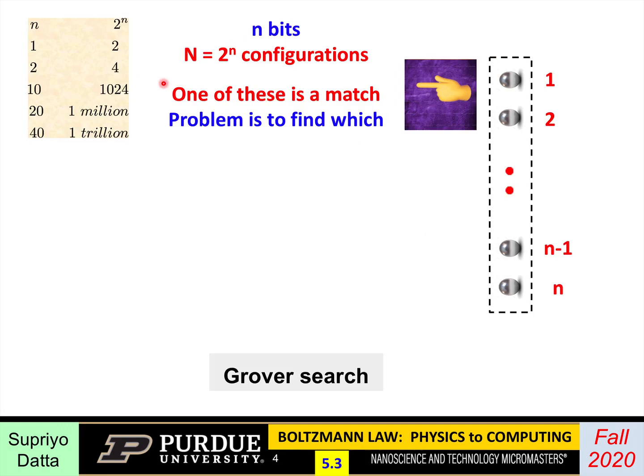In Grover's search, the problem is this: we have a database with small n bits, which can host capital N, which is 2 to the power n configurations. Of these 2^n configurations, there is one which is the correct answer, the target that we want to find. We need to find which of these configurations is the right one. As small n increases, capital N increases exponentially. So with, say, 40 bits, you could have like a trillion configurations, a lot to search from.